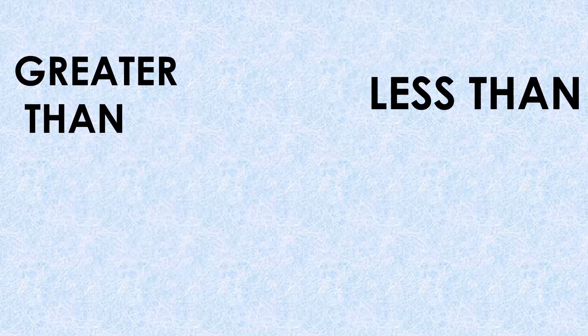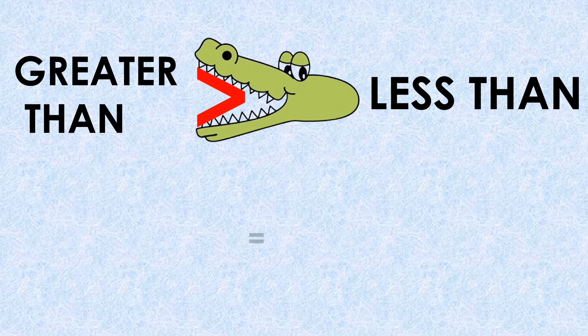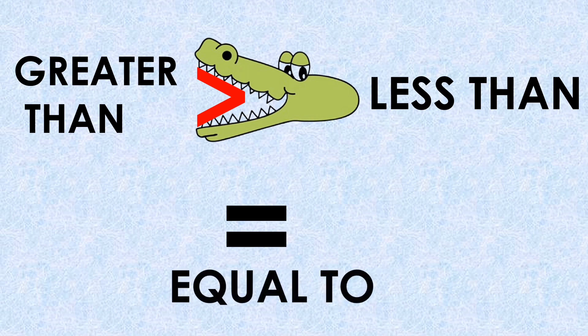Greater than and less than can be easily understood by crocodile mouth. The crocodile mouth will open toward the bigger number. Equal to means two slipping lines.